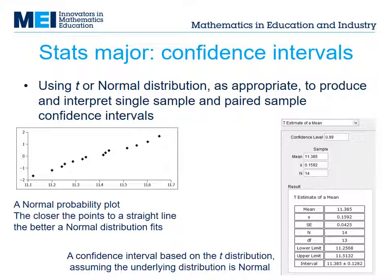Compared to MEI S3, we've cut down on the number of hypothesis tests using the t-distribution and focused more on confidence intervals. Often there is a modelling assumption required that the underlying distribution is normal. We've included the use of software to check whether this assumption is appropriate. Here's an example of a normal probability plot produced by software, which students might have to interpret in an exam. We hope that they'll use software like this in the classroom — it's a straightforward thing to do, and anyone working with data in the real world would check their modelling assumptions in this way.